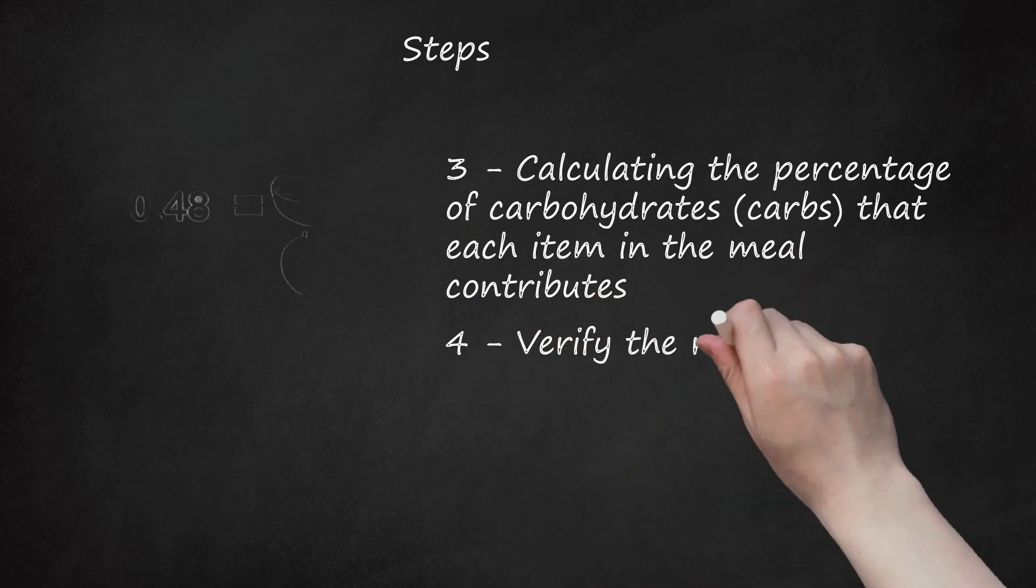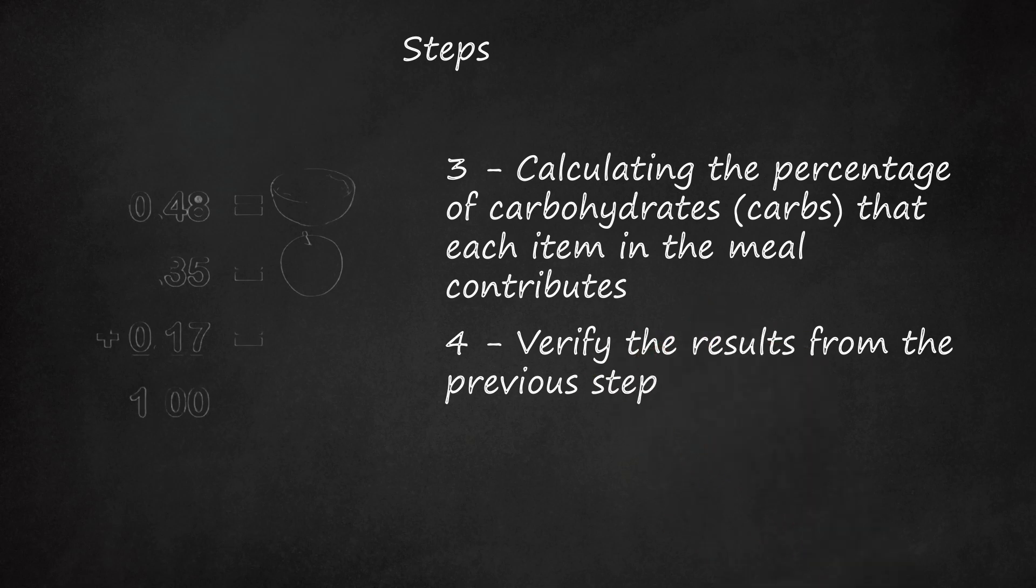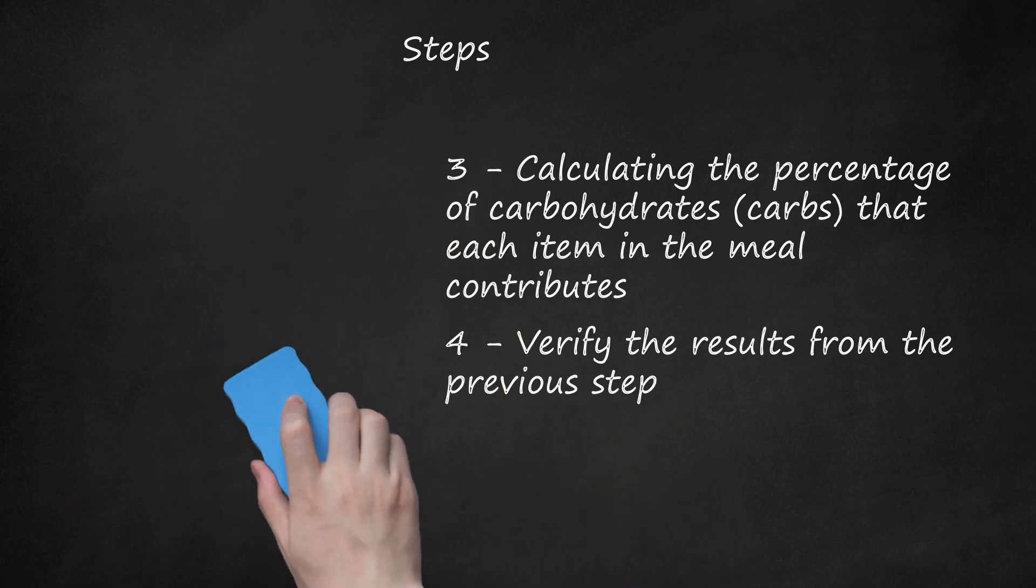Step 4: Verify the results from the previous step. All of the numbers calculated in the last step should add up to be 1.00 (maybe slightly off due to rounding, that's okay). Example: Oatmeal equals 0.48, Apple equals 0.35, Yogurt equals 0.17. 0.48 plus 0.35 plus 0.17 equals 1.00.